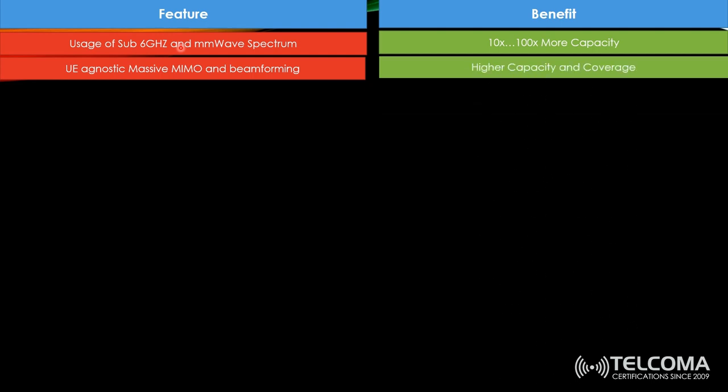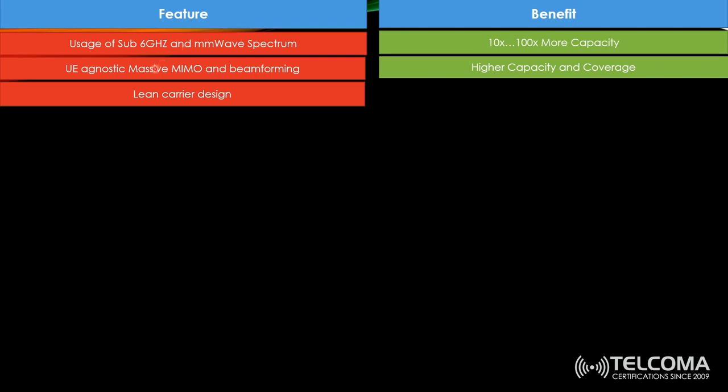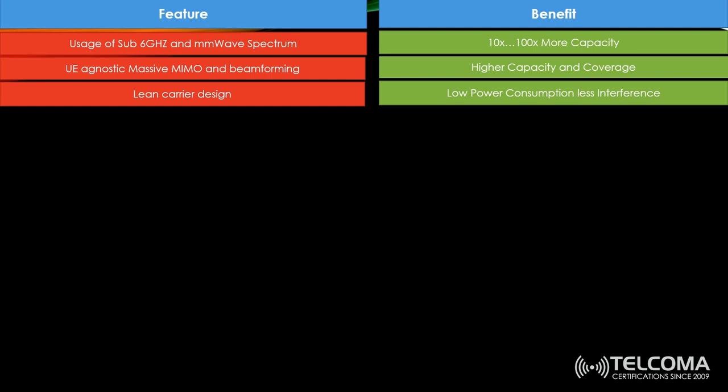The lean carrier design is a new concept: UE handsets don't need to support the entire carrier bandwidth. With a 100 MHz carrier in 5G, the question is whether all handsets need to support the full 100 MHz or even 200 MHz — obviously not, as that would be very costly. Through receiver bandwidth adaptation, a handset only supports part of the carrier bandwidth. This relates to lean carrier design and will lower battery consumption and reduce interference.